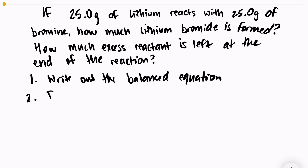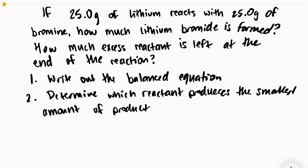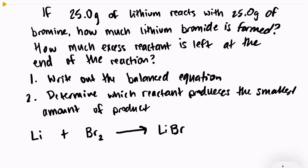Our second step is to determine the limiting reactant — which reactant produces the smallest amount of product. First, let's write out our reaction. I have lithium and bromine, which is diatomic since it's a halogen, forming lithium bromide: 2Li + Br₂ → 2LiBr. I have two bromines on the left so I need two on the right, which means I need a coefficient of 2 in front of lithium.